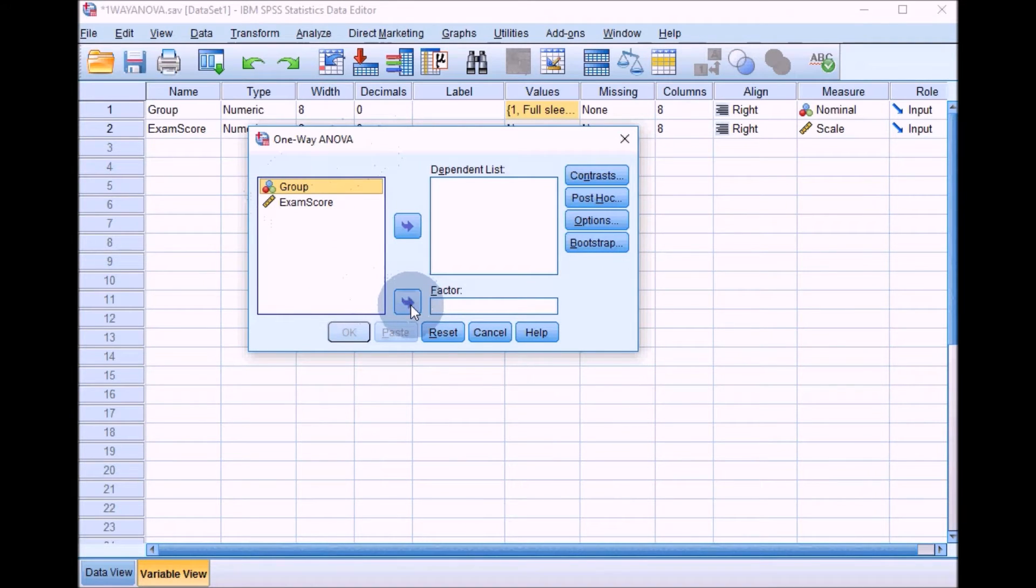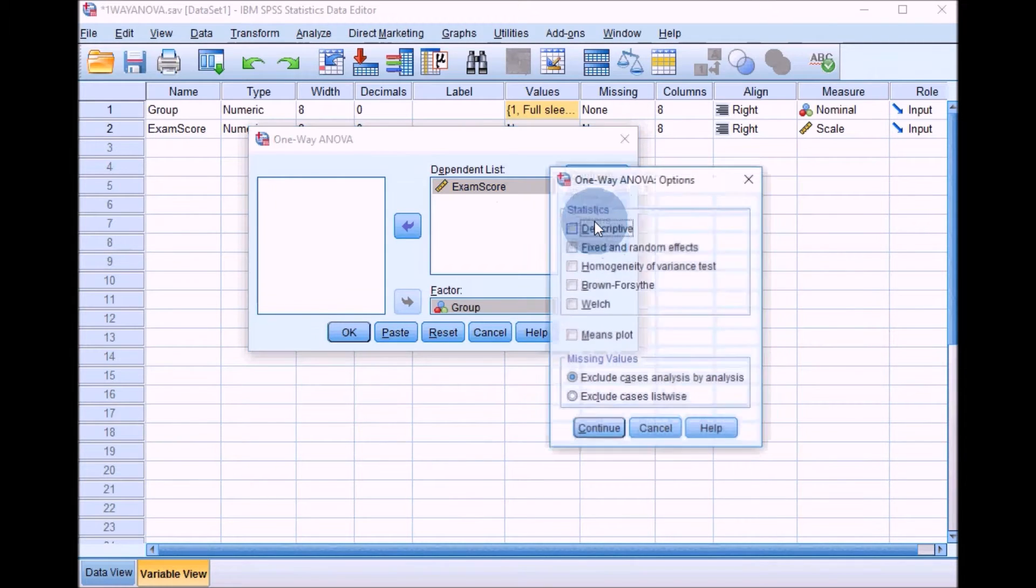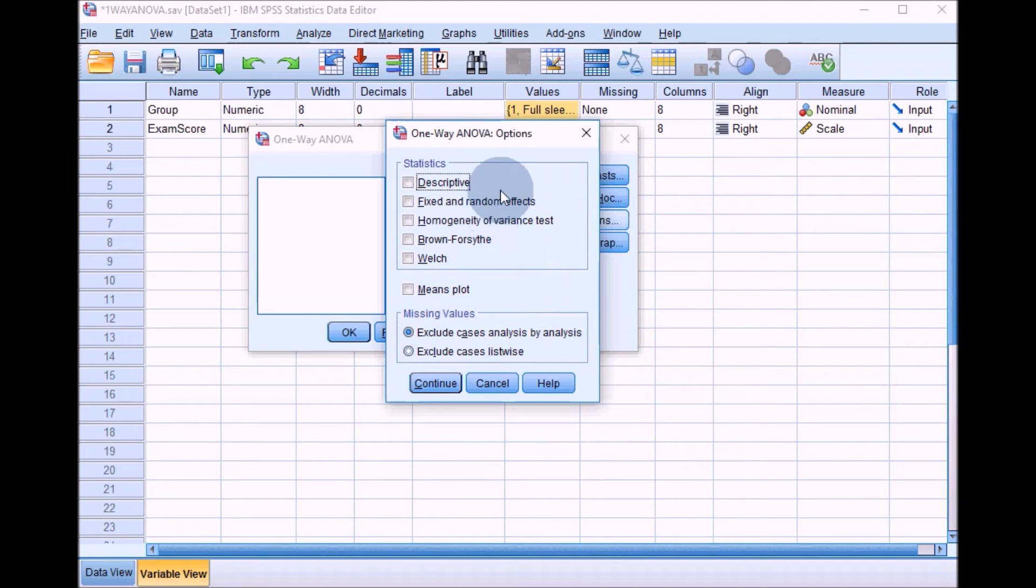This will bring up this box. We want group to go into factor - this is the independent variable, for some reason called factor in SPSS. Exam score goes over to the dependent box. We need to select some options in this one-way ANOVA, otherwise we won't get everything we really want. If you click on Options, you can see this will bring up this box. There are various options you can choose.